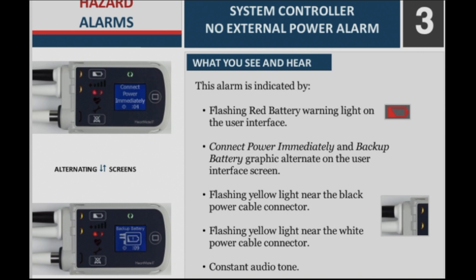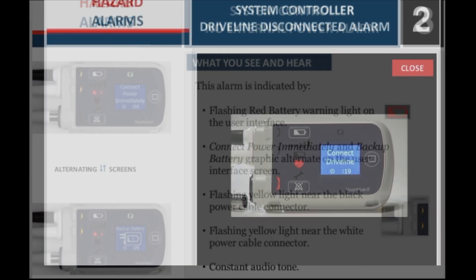System controller no external power alarm — what you see and hear. This alarm is indicated by: a flashing red battery warning light on the user interface; connect power immediately and backup battery graphic alternate on the user interface screen; a flashing yellow light near the black power cable connector; a flashing yellow light near the white power cable connector; and a constant audio tone.